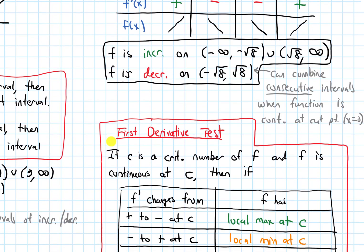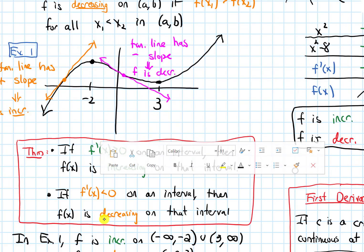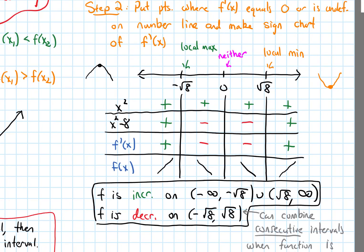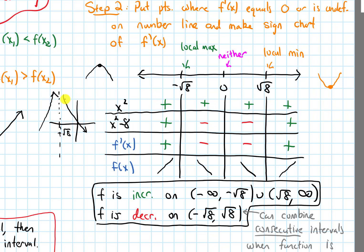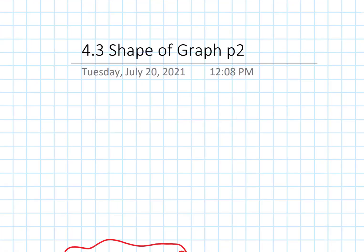The condition that f needs to be continuous at c is very important. If it wasn't continuous — say there's a vertical asymptote at negative root 8 — the function might be increasing on the left and decreasing on the right, but that's definitely not a local max because there isn't even a point there at negative root 8. So continuity is very important.